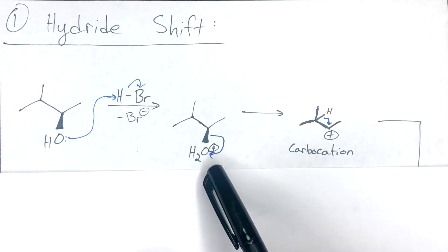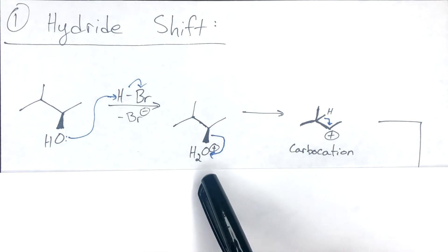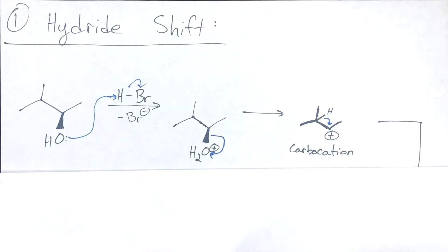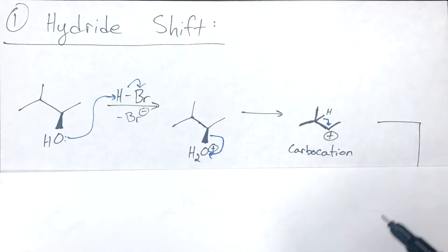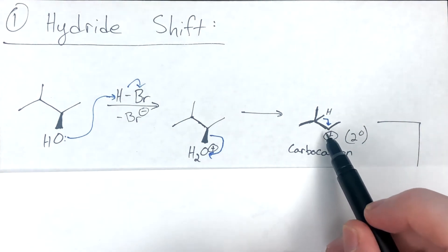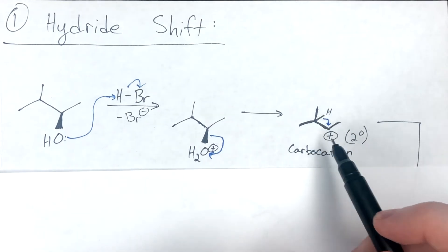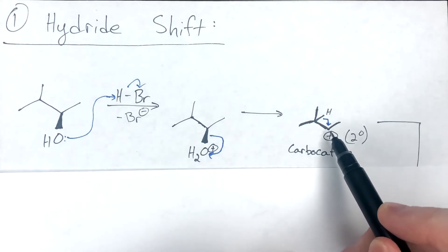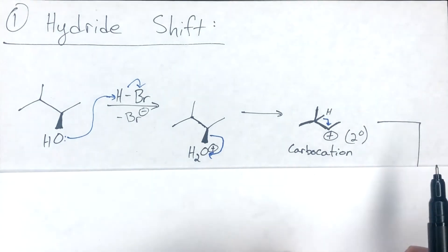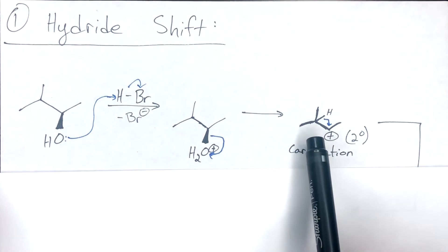The point of making water in the molecule is that it's now a great leaving group. When it leaves, you create a carbocation at that position. Notice this is a secondary carbocation — we count the number of carbons bound directly at that position: one, two — so this is a secondary carbocation. It's feasible to form; it's not primary, but there is potential for a hydride shift.